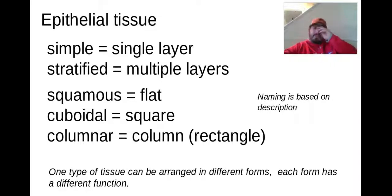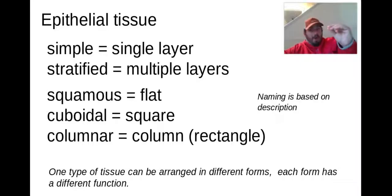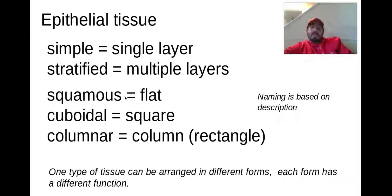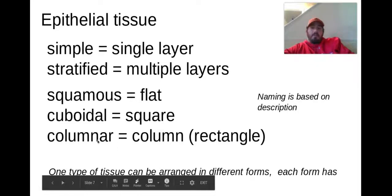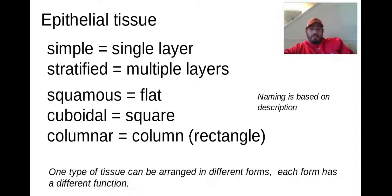And then we have different shapes. Squamous would be flat — think about it like squashed, like a pancake. That's squamous. Then we have cuboidal — in the shape of a cube or a square. And then columnar — like a column, a pillar, a rectangle.